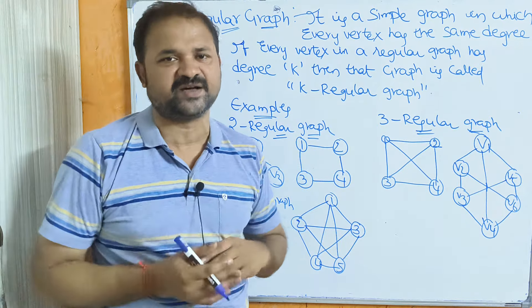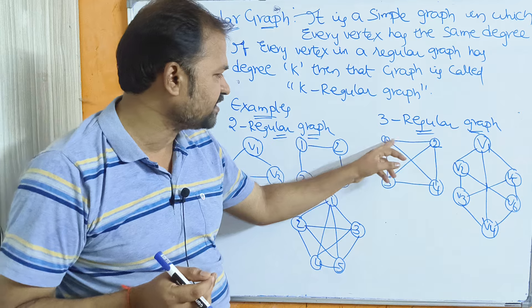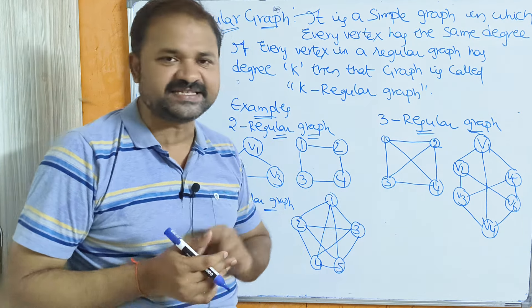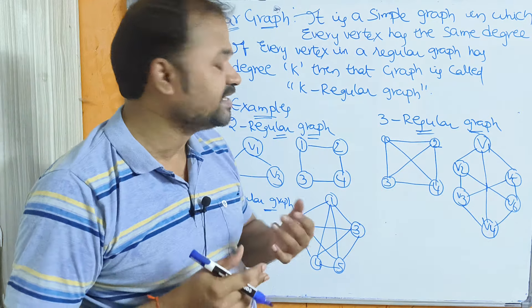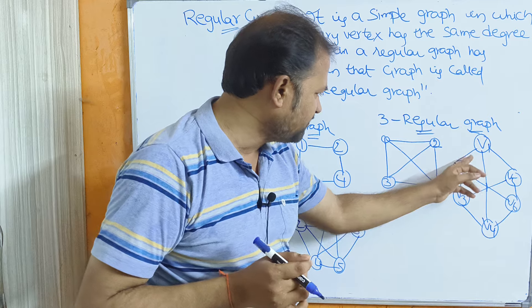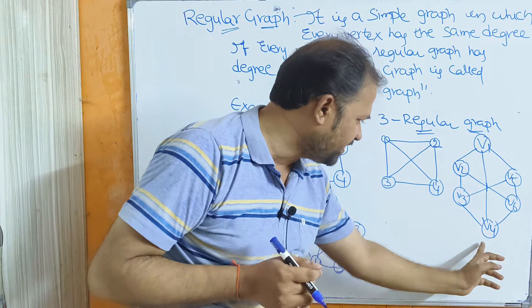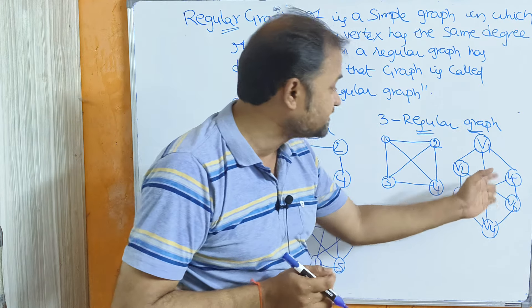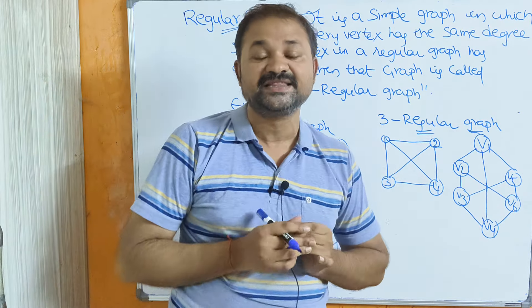Likewise, we can have plenty of examples. For a 3-regular graph, the degree of every vertex is 3. This is also an example of a 3-regular graph — if you consider V1, it is associated with V2, V5, and V4, giving 3 edges. So the degree of every vertex in this graph is also 3.